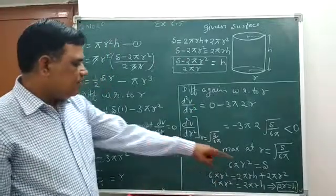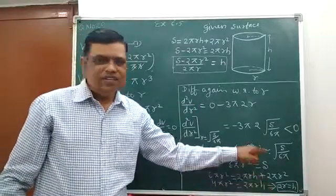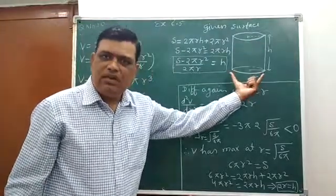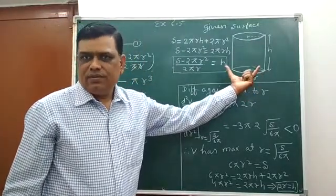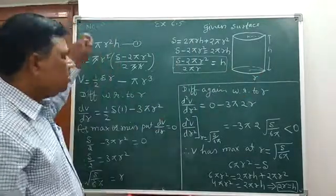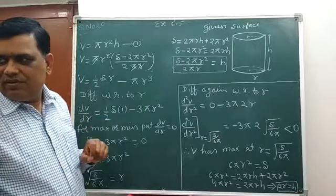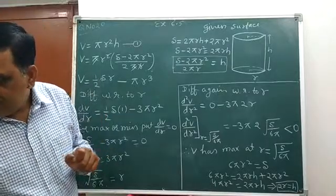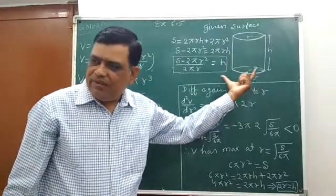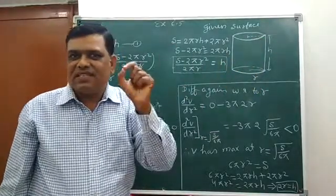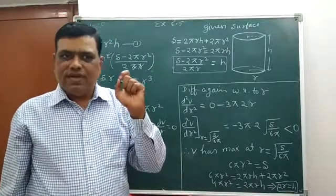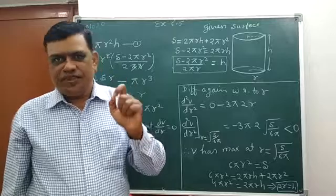Means height is equal to 2r, means volume will be maximum when height is equal to the diameter of the base. Got it? This volume will be maximum at this condition when height is equal to the diameter of the base in a cylindrical tank. This is a very important question at the point of examination.